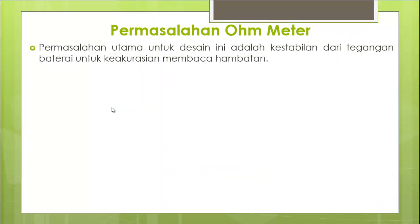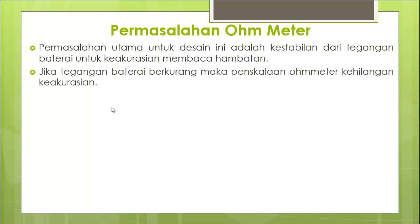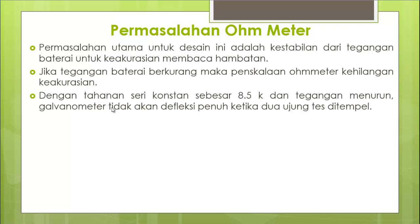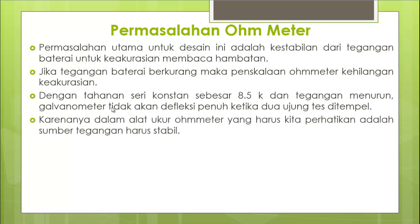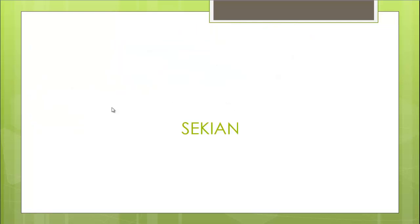Permasalahan utama ohmmeter adalah ketidakstabilan. Ohmmeter menggunakan tegangan internal baterai untuk mengukur nilai resistansi pasif. Jika kondisi baterai tidak stabil karena sering dipakai dan tidak diganti secara kontinu, maka akan mengalami kehilangan keakurasian. Oleh karena itu, nilai tegangan internal harus secara kontinu dijaga agar hasil pengukuran bersifat presisi. Sekian dari saya, sampai jumpa di video selanjutnya.